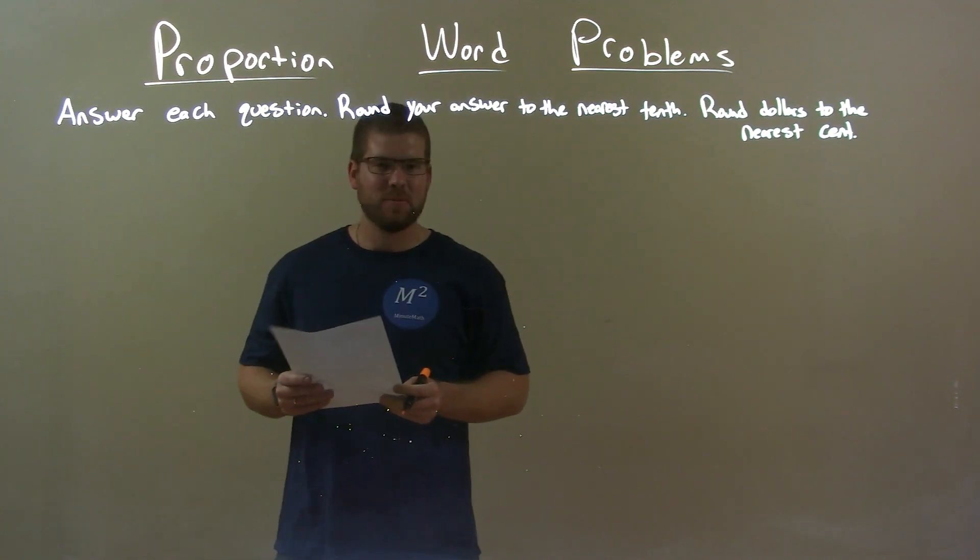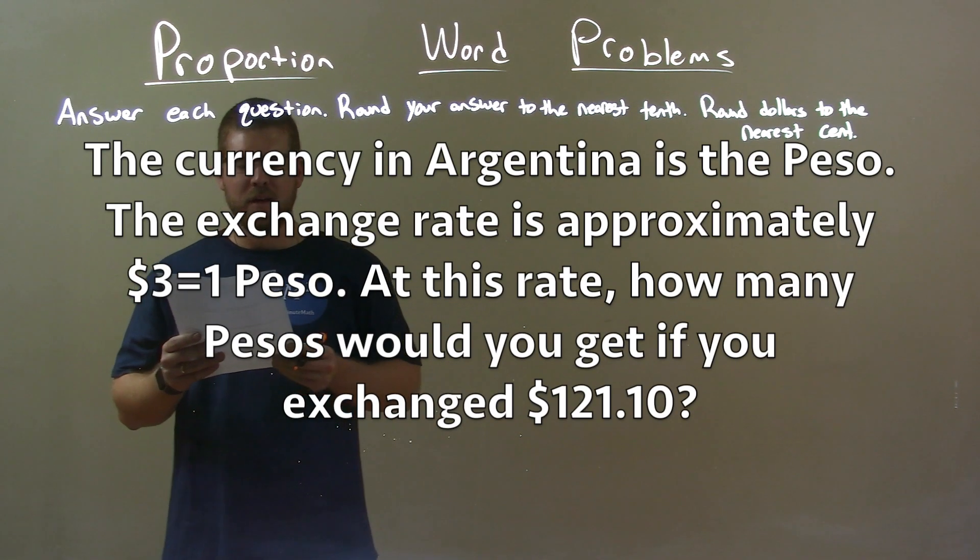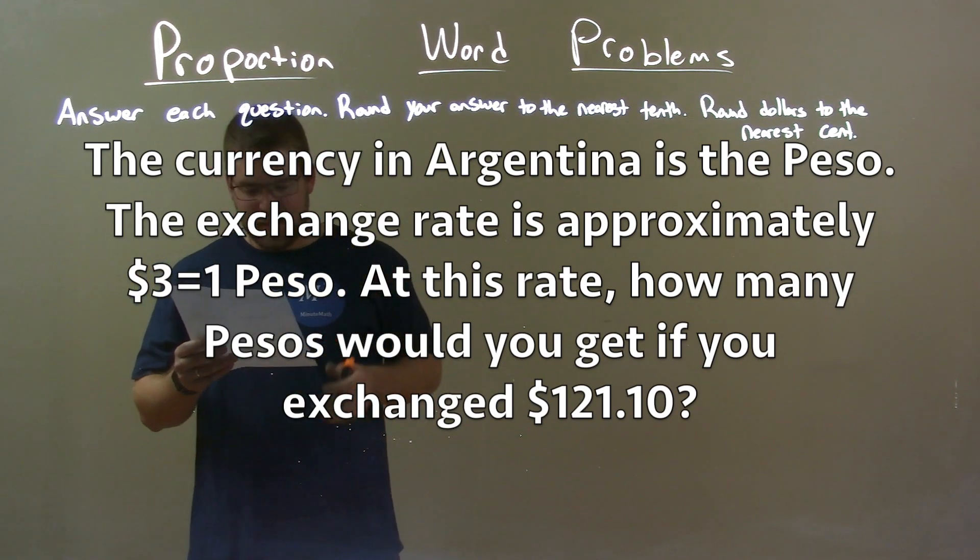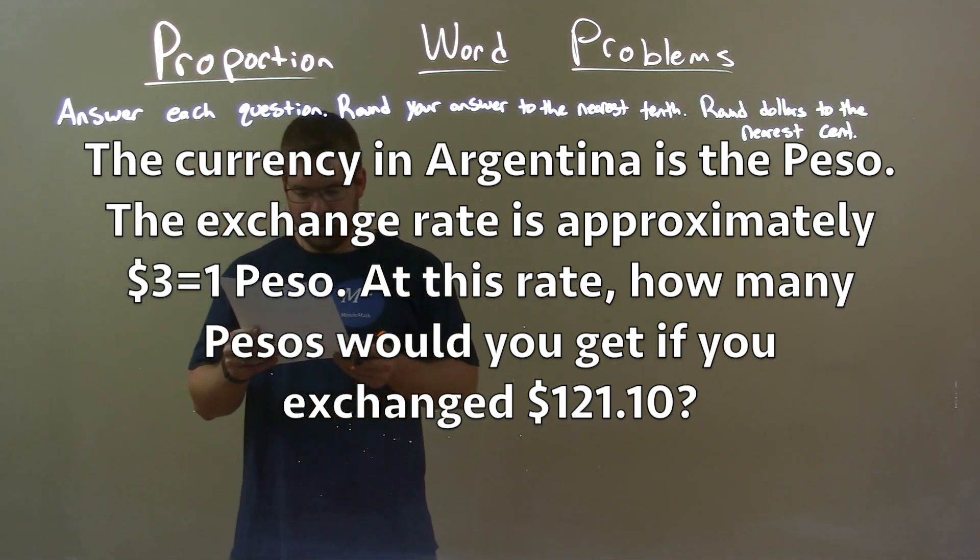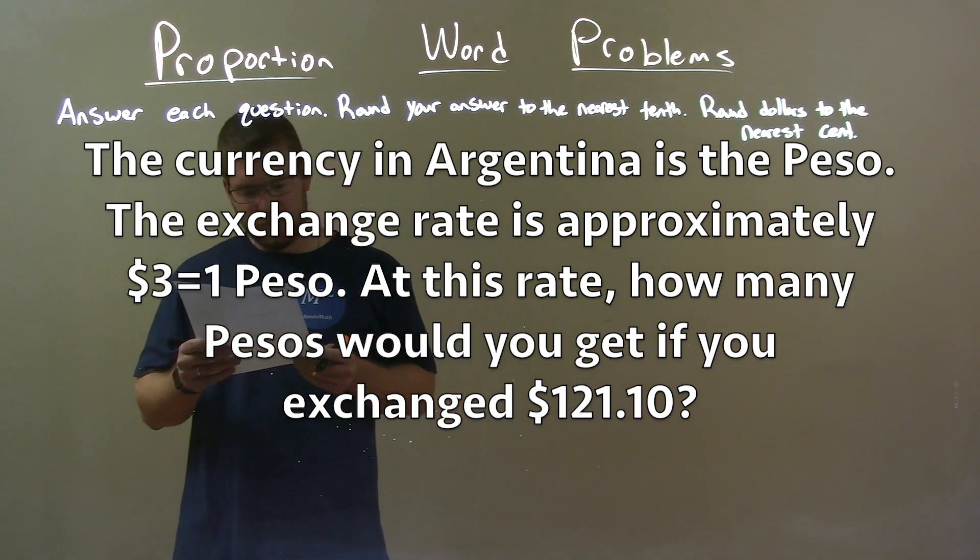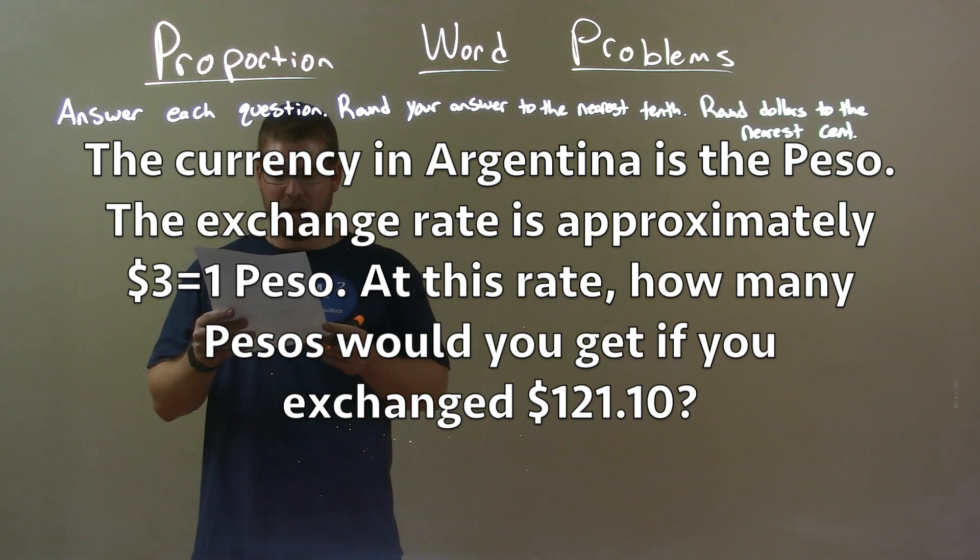If I was given this word problem: the currency in Argentina, where my family's from, is the peso. The exchange rate is approximately three dollars to one peso. At this rate, how many pesos would you get if you exchanged $121.10?